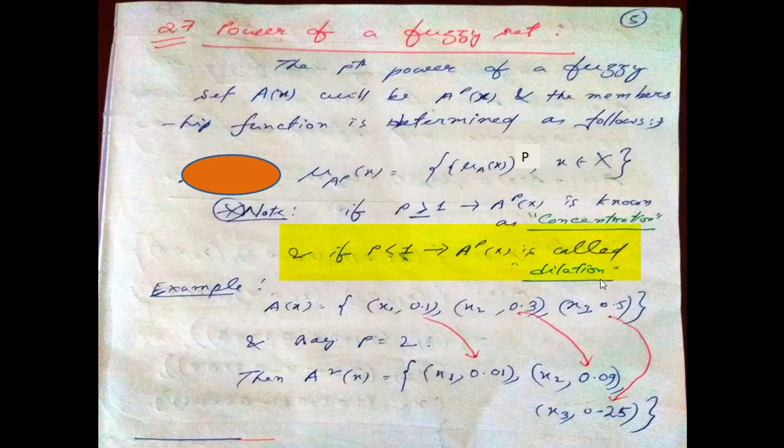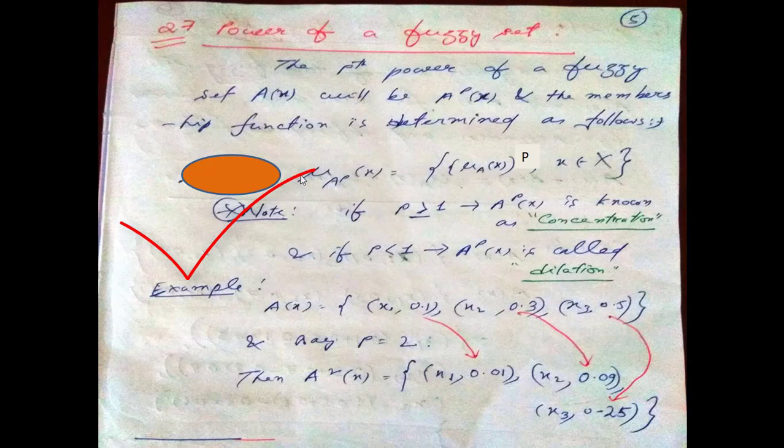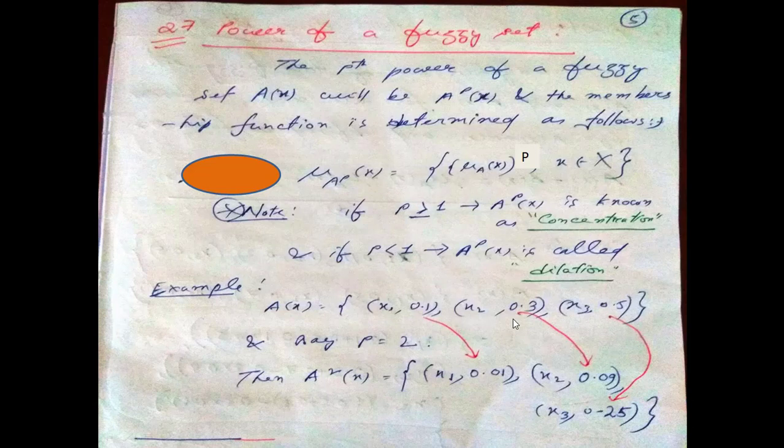Let's come to an example. Say A(x) is x1 over 0.1, x2 over 0.3, x3 over 0.5. Say P is equal to 2, means we need to find out the power 2 of the set A(x).